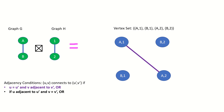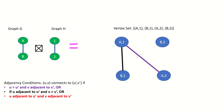According to the second adjacency condition, vertex A1 will connect to vertex B1, as the right entry of those vertices is the same vertex in graph H, that is vertex 1, and the left entries are adjacent in graph G — vertex A and vertex B are adjacent. Finally, according to the third adjacency condition, vertex A1 will connect to vertex B2, as the left entries are adjacent in G and the right entries are adjacent in H. Those are all the connections for vertex A1.